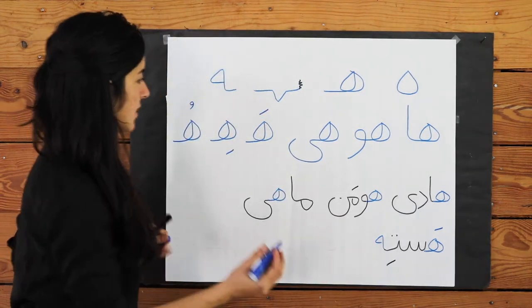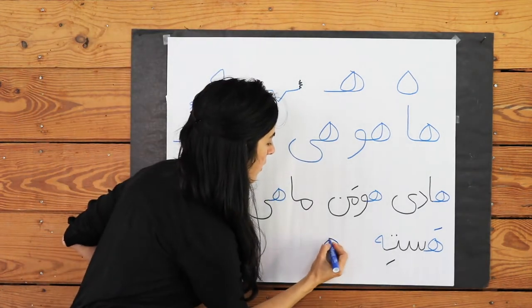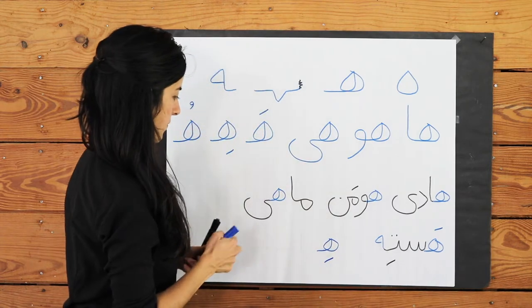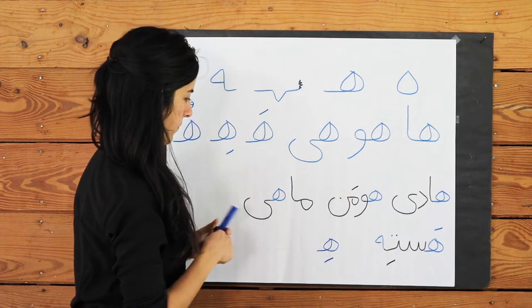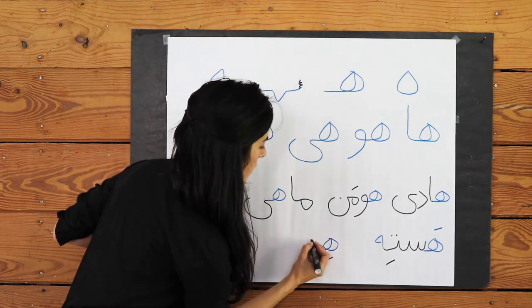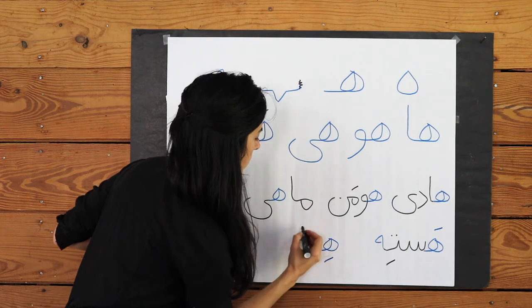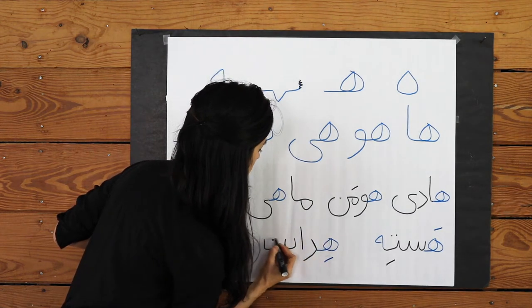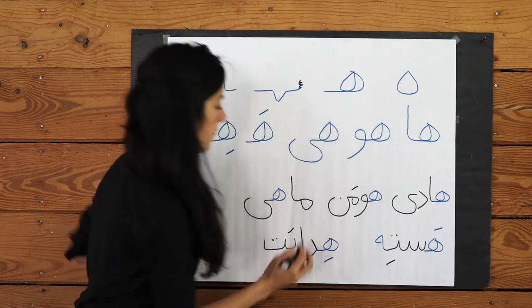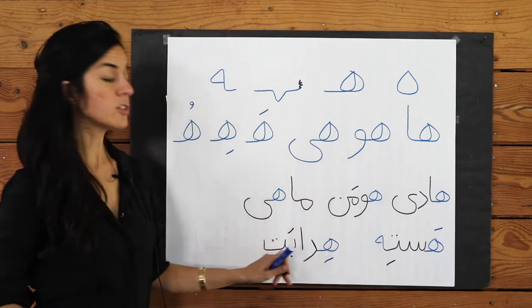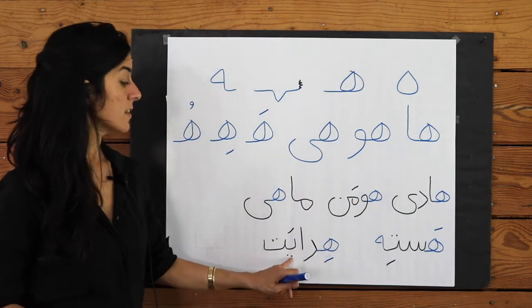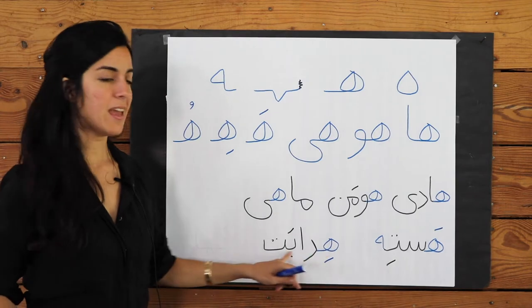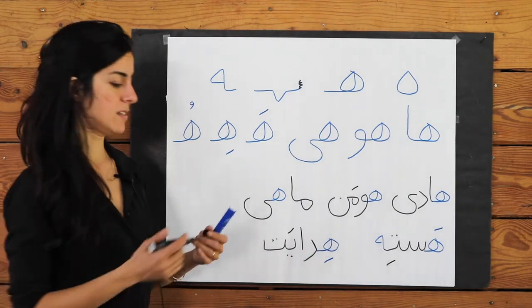H with an A accent: Hedayat — and this has our Y sound from last week too. Hedayat means guidance.